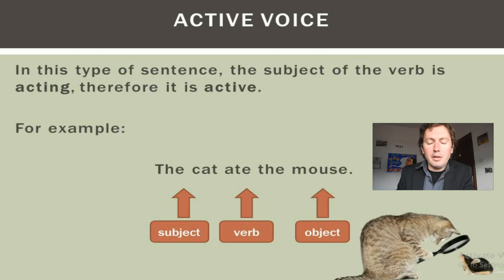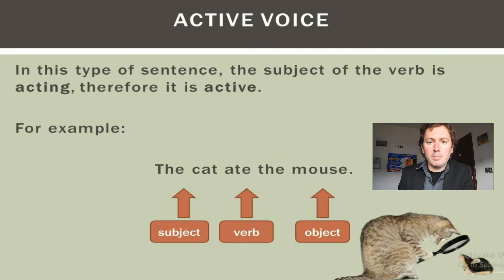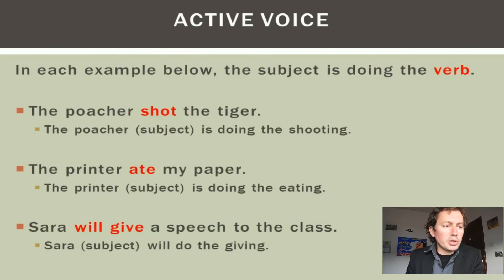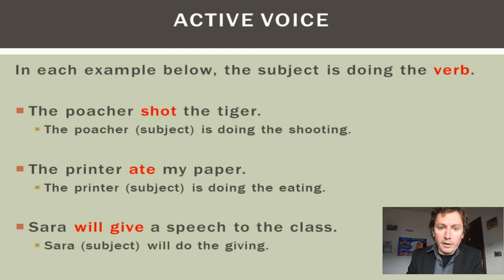The cat ate the mouse. It's very simple to understand — there's a cat, there's a mouse, and the cat is eating the mouse. Of course it's past tense. Here are some more examples: the poacher shot the tiger; the printer ate my paper; and Sarah will give a speech to the class. In each case, the person or thing listed first is doing the verb.